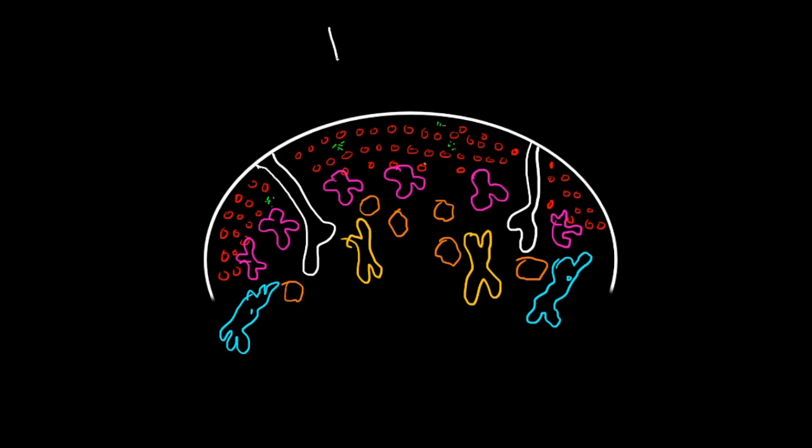So this is the thymus right here. Kind of a brief introduction, the thymus and the bone marrow are the primary lymphoid tissues, so they're involved in maturation of lymphocytes.